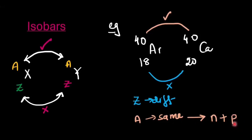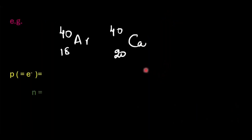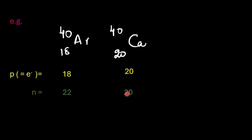It is to be noted that isobars have different numbers of protons and different numbers of neutrons, but they sum up to the same value. Let's determine the number of protons and neutrons in these two atoms. The number of protons is given by Z, so in argon it would be 18. The number of neutrons would be 40 minus 18, that is A minus Z, which equals 22. In calcium, the number of protons would be 20 and the number of neutrons would be A minus Z, which is 20. The number of neutrons and protons are different, but they sum up to the same value. Additionally, the number of electrons equals the number of protons in a neutral atom.